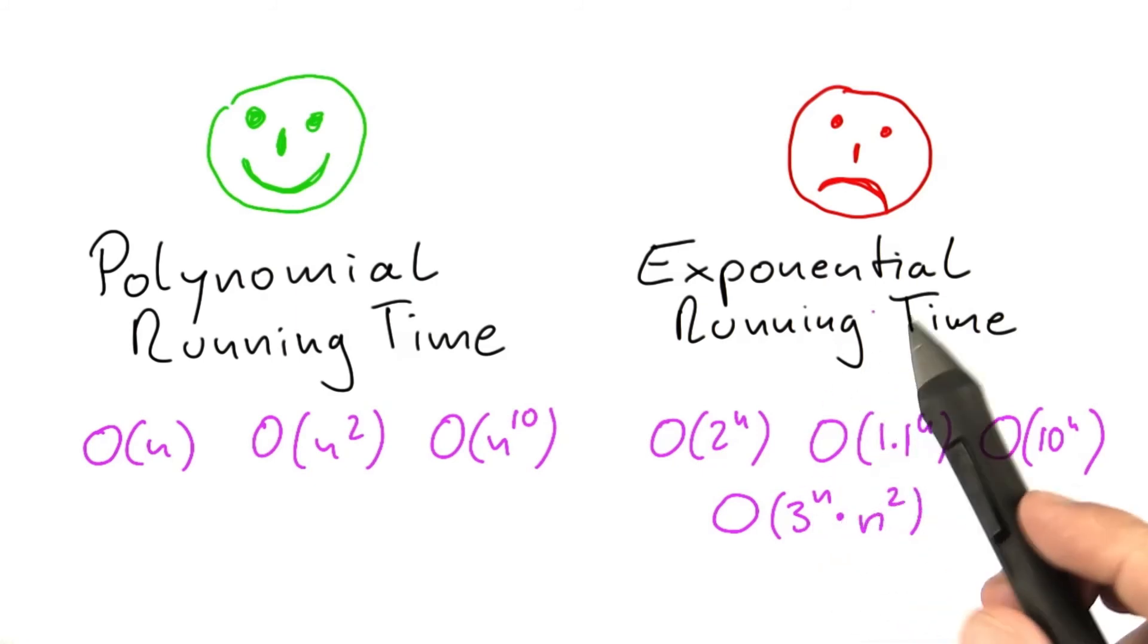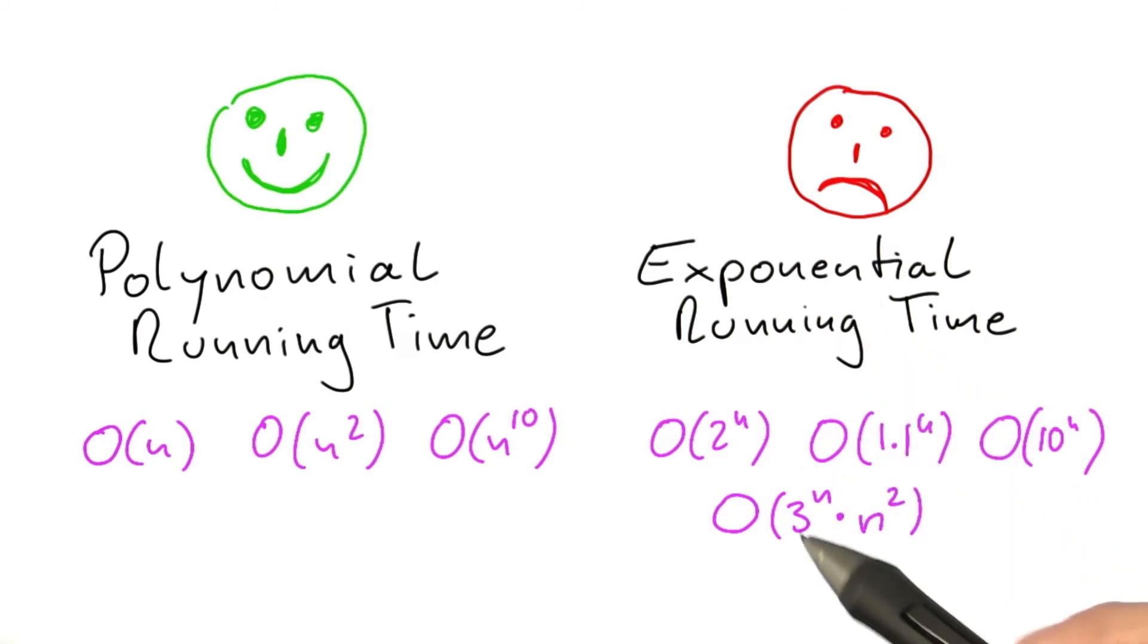That would also be called exponential running time because as you saw in previous quizzes, the 3 to the power of n is the fastest growing term here. So the dominant term here is an exponential term. So running times like this would also fall under exponential running time.